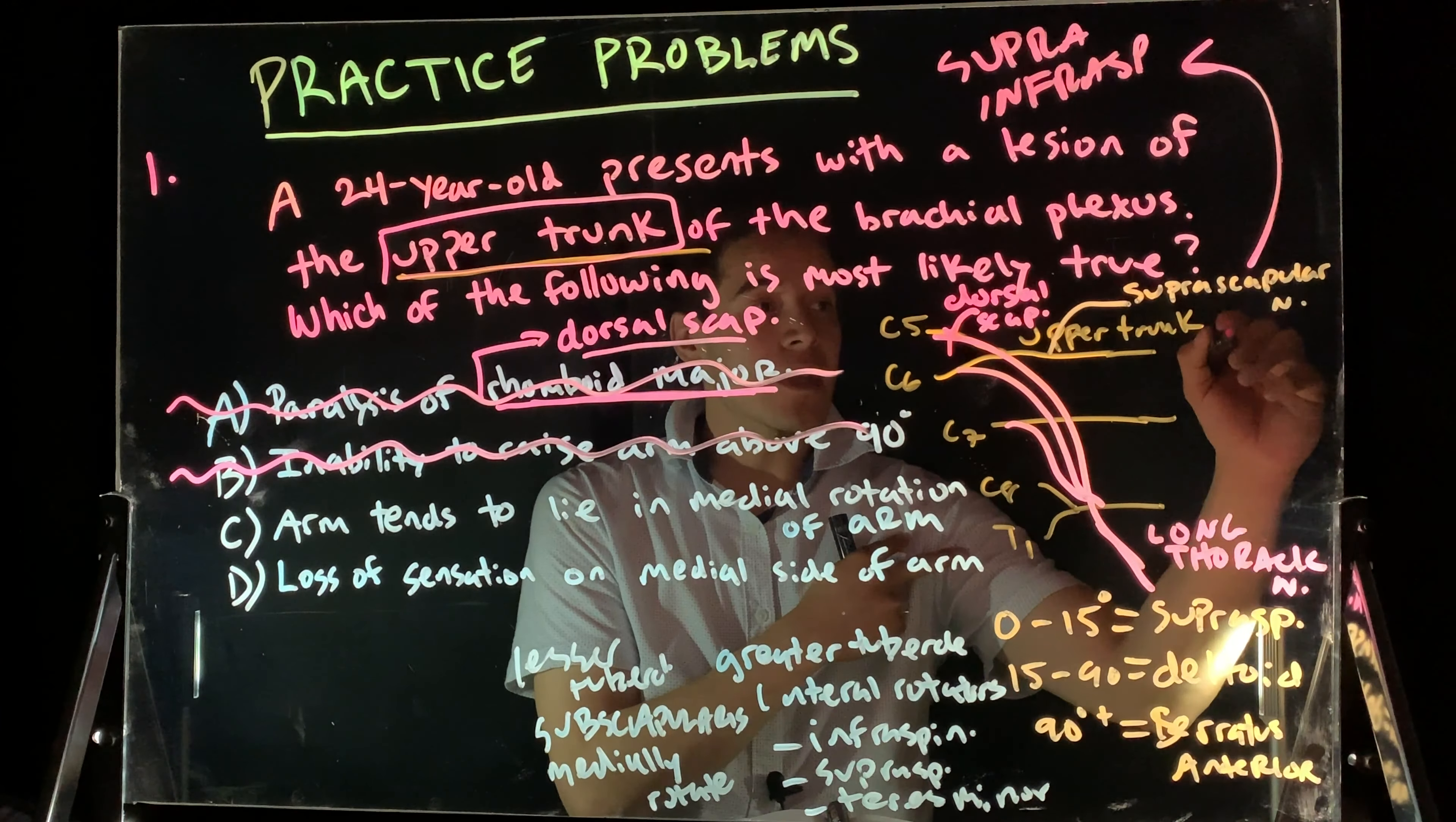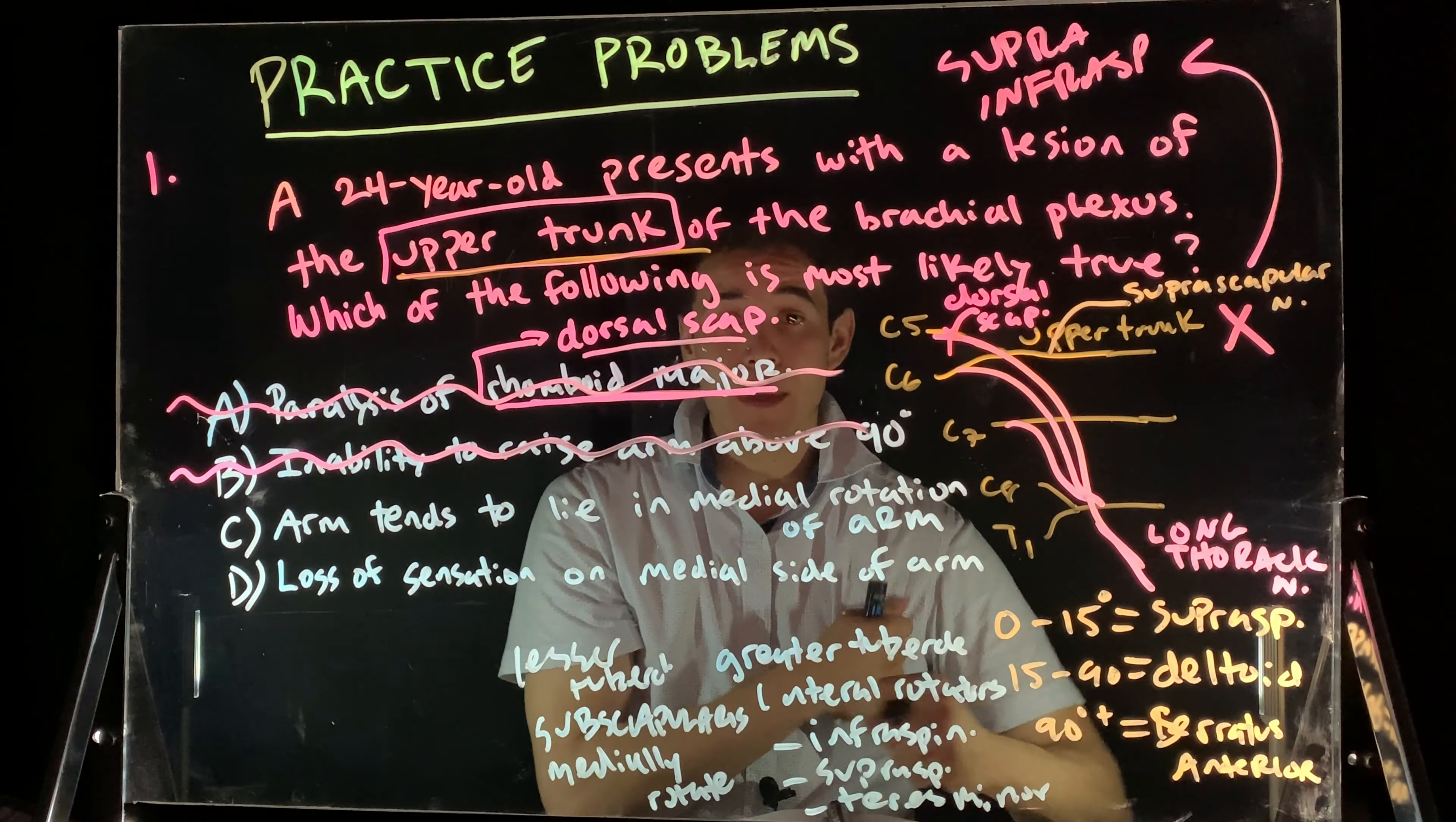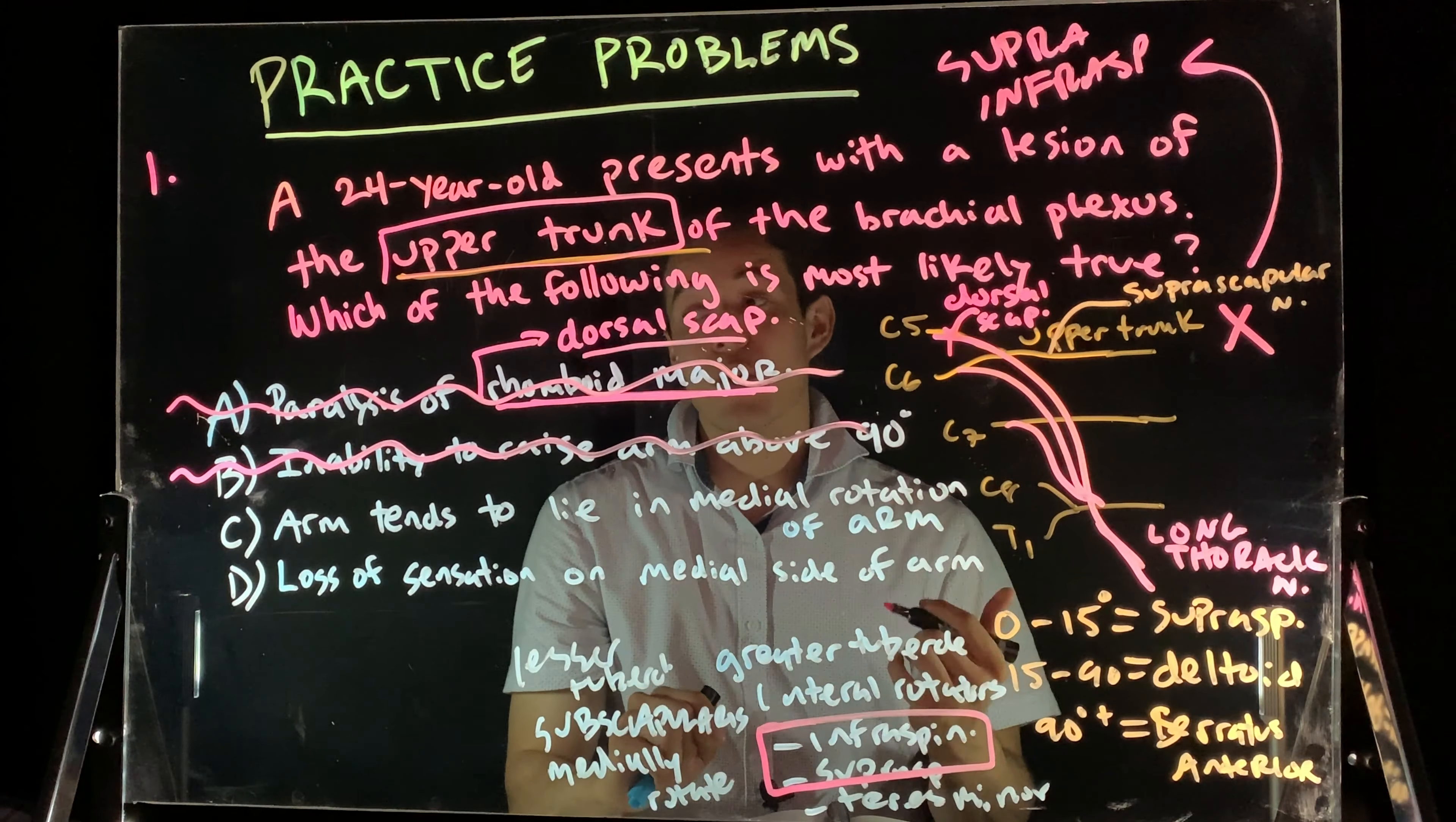But if this nerve is damaged, then those lateral rotators aren't working as well. Right? We still have a little bit of teres minor, but my supraspinatus and my infraspinatus aren't laterally rotating. That means, relative to my subscapularis, the arm is going to be more of a medially rotated position because we no longer have these lateral rotators keeping the arm kind of in check in a neutral position.